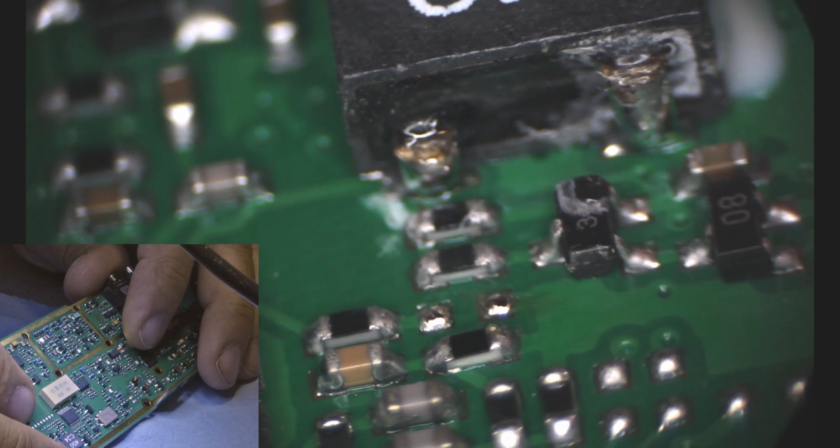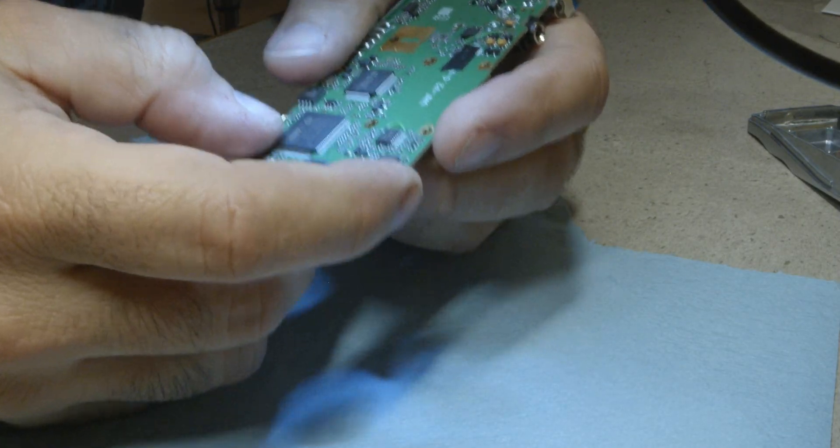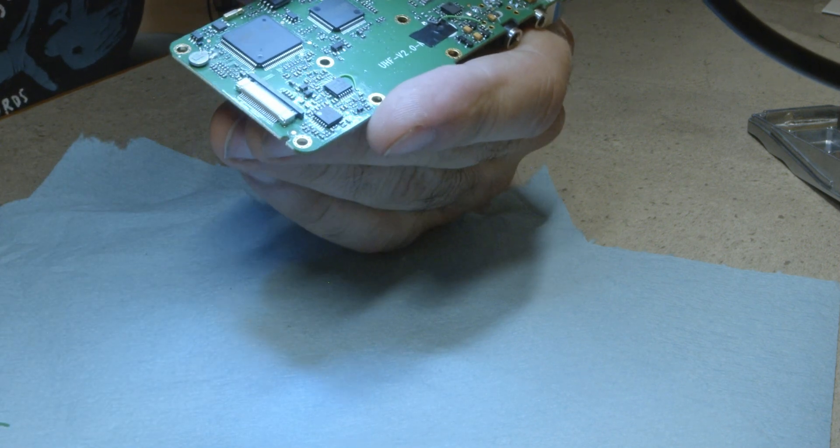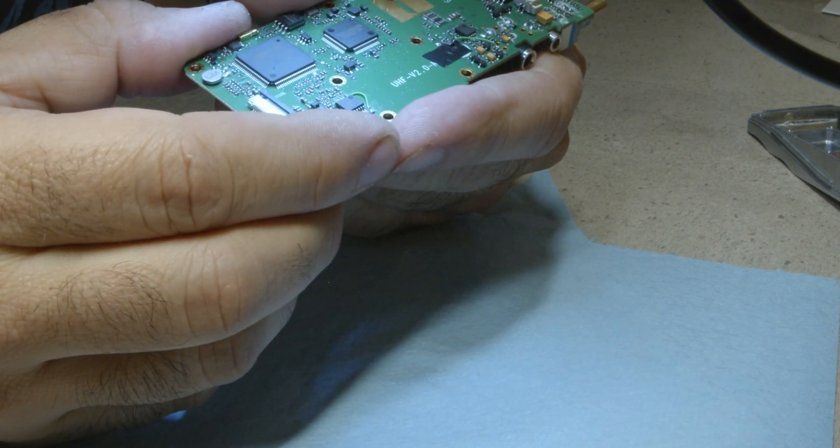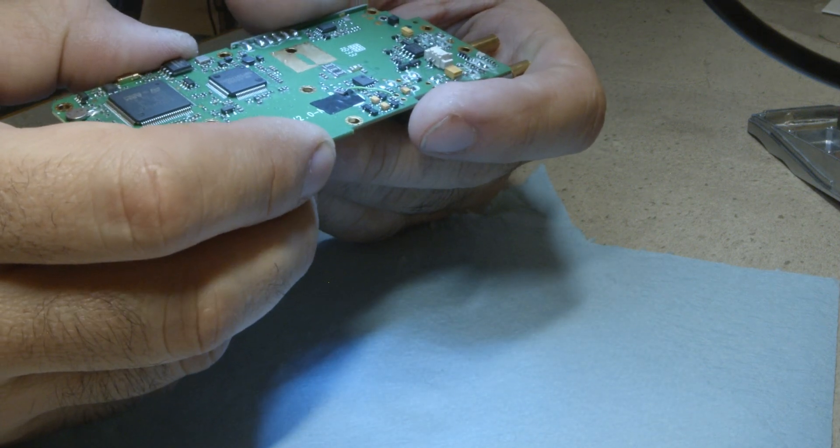So it's time to put it back together. Assembly is simply reverse of disassembly. I took the camera off the microscope so I can actually look through it for final inspection. Everything looks good so back together it goes.